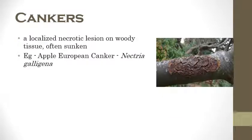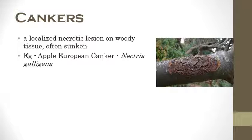The next one is cankers. Here, sunkening of woody tissues can be observed. The tissue gets dried off and the bark also starts to remove slowly. Canker is generally caused by both bacteria and fungi. The example is apple European canker which is caused by Nectria galligena.